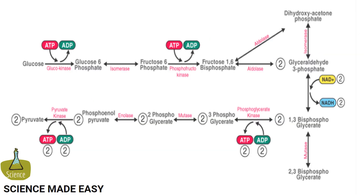The process of glycolysis comprises a total of 10 steps, where it converts one molecule of glucose into two molecules of pyruvate.